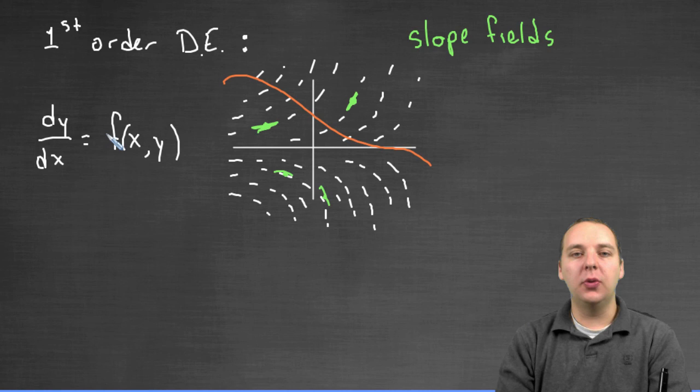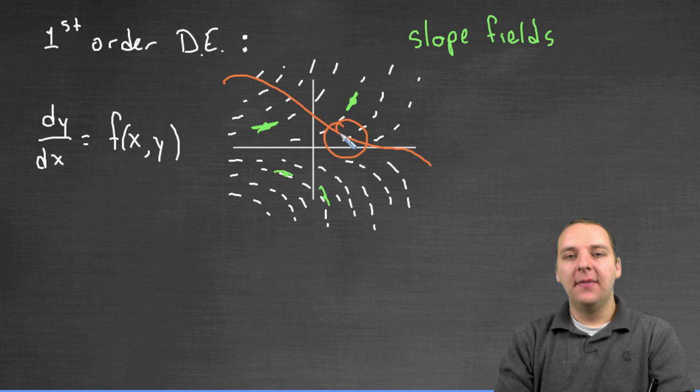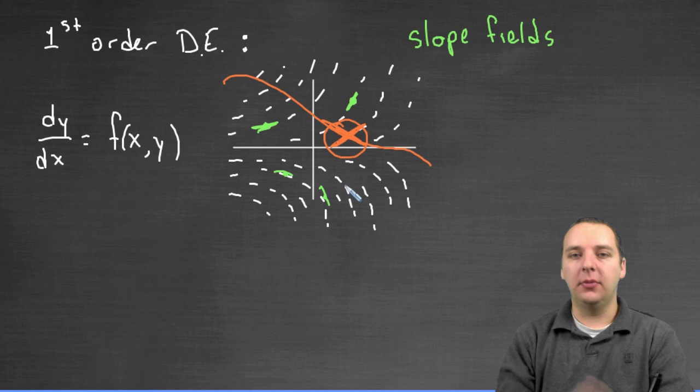And so you see these slope fields kind of push you in a particular direction. For instance, this curve could not be the solution to this differential equation. Why? Well, at any given point, let's just take a point like this for instance, its slope does not match what the direction field says it should be, right?